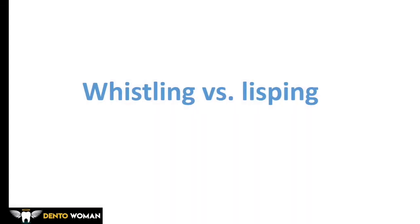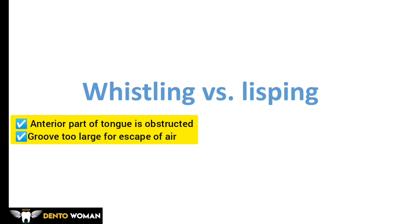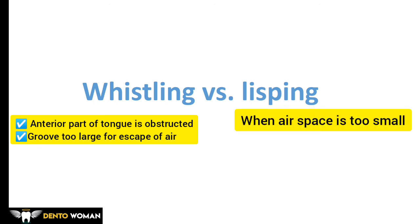Whistling and lisping can both occur when pronouncing S, but they are different phenomena. Whistling occurs when the anterior part of the tongue is obstructed and the groove is too large for escape of air. Lisping occurs when the air space is too small. To correct it, the palatal part of the denture must be made thinner.